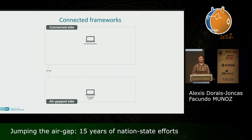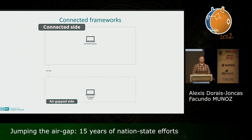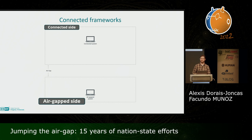Most frameworks belong to the connected category. Those are built to provide fully remote, end-to-end connectivity over the internet between the attacker and the compromised systems on the air gap side. We consider the target network as having two sides separated by an air gap: at the top, the connected side where systems have internet connectivity, and at the bottom, the air gap side — that's where the attacker really wants to get to.